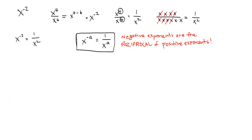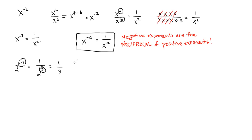That's the important thing: negative exponents do not give you negative answers. For example, if I had 2 to the negative 3, our rule says that's going to be 1 over 2 to the third — it is the reciprocal of the positive. So 2 to the negative 3 is 1 eighth. Not negative 8. 2 to the negative 3 is 1 eighth. So let's look at a couple of other examples.